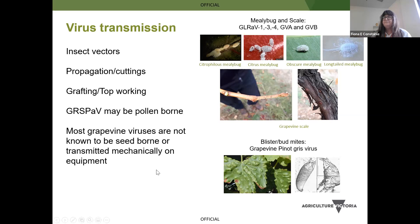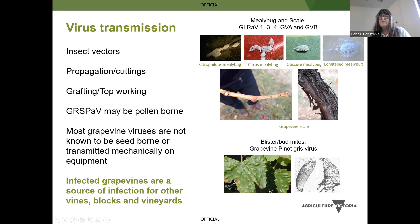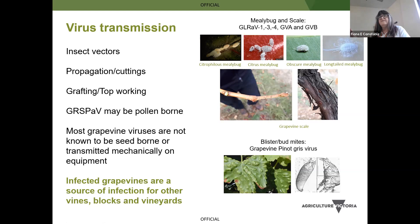When you do have an infection in a vineyard — particularly those transmitted through insect vectors such as leaf rolls, GVA, GVB with scale and mealybug, or GPGV where bud and blister mite is a vector — those infected vines are a source of infection for other vineyards, other vines and other blocks. If you don't see symptoms in one block, they can still be a reservoir for something that is susceptible. You need to be very mindful of infection.